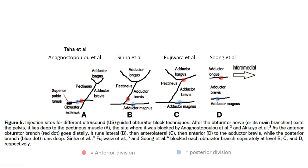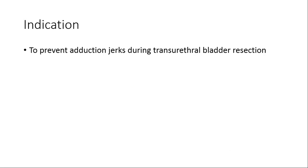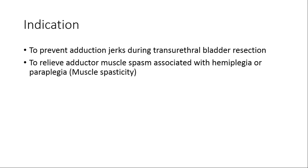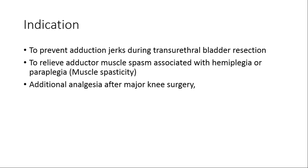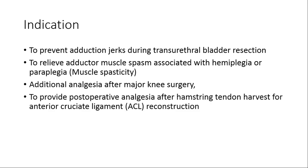The indications for obturator nerve block include: preventing the adductor jerk or obturator jerk that occurs during transurethral bladder resection surgeries; relieving adductor spasticity in hemiplegia or paraplegia; providing additional analgesia in knee surgery post-operatively; and providing post-operative analgesia after harvesting of the hamstring tendon for ACL reconstructions.